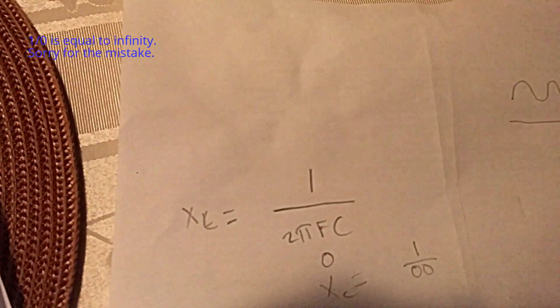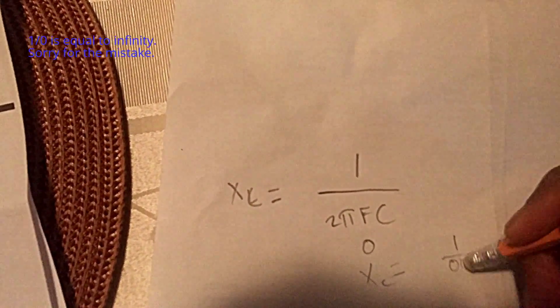So X sub C, which is capacitive reactance, is also a measure of resistance in ohms. So it's resistance, high, very high resistance. One over zero, which is equal to infinity, is basically a very high resistance.